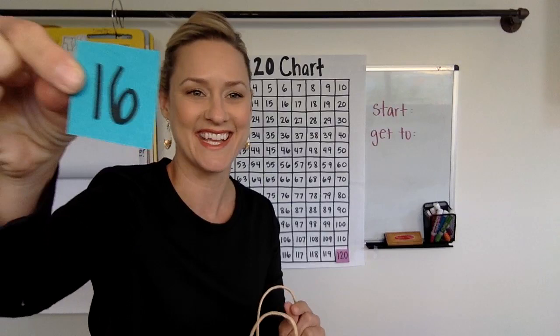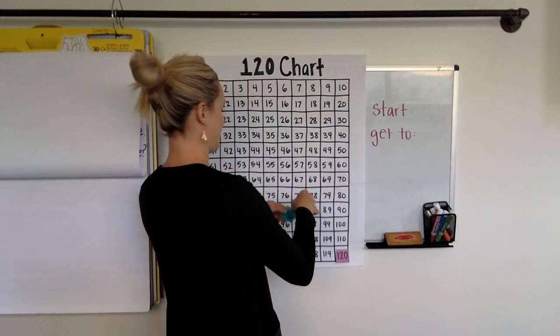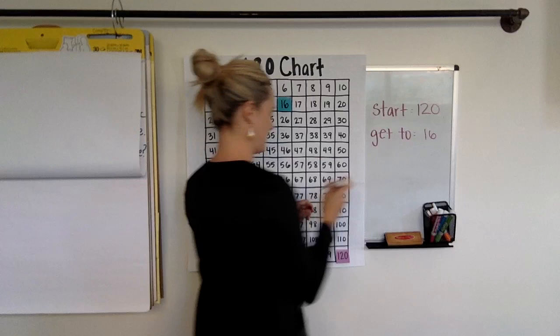Alright, so I want you to think about if we started at 120 and we got to the number 16, how far away they would be. So our starting number is 120 and our get to number is 16. Alright, you ready? Go ahead and strategize how would you do this.